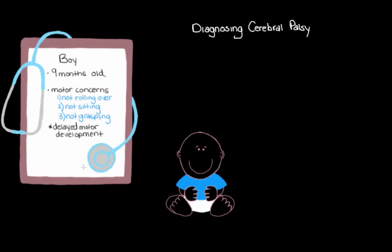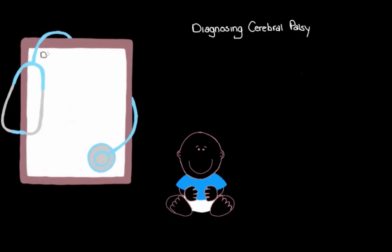This scenario — where parents first notice their child isn't meeting key motor milestones and bring it up at a doctor's visit — is often how cerebral palsy is first suspected. Unfortunately, we don't have a specific test to definitively diagnose cerebral palsy. Instead, we rely on asking the parents questions about the child's movements, doing physical exams, and imaging the child's brain, often an MRI or an ultrasound, because they allow us to see any potential areas of damage the best.